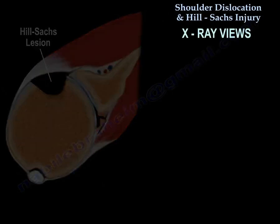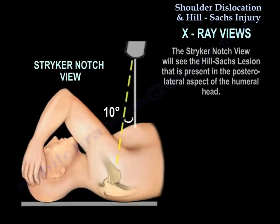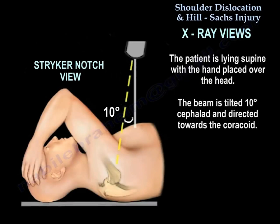Regarding X-rays, the defect may be missed on routine AP views. X-ray views are helpful for subluxation or dislocation. However, a combination of an AP view in internal rotation and a Stryker notch view will allow evaluation of the Hill-Sachs lesion present in the posterolateral aspect of the humeral head. You can see here how the Stryker notch view is obtained: the patient is lying supine with the hand placed over the head and the beam is tilted 10 degrees cephalad, directed towards the coracoid.